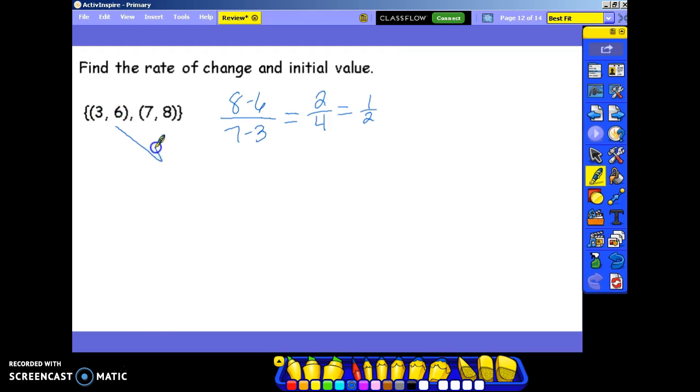I pick an ordered pair to plug into my equation. That gives me 6 equals 1 half times 3 plus b. 1 half times 3 is 3 halves. In order to get b by itself, I subtract 3 halves from both sides.